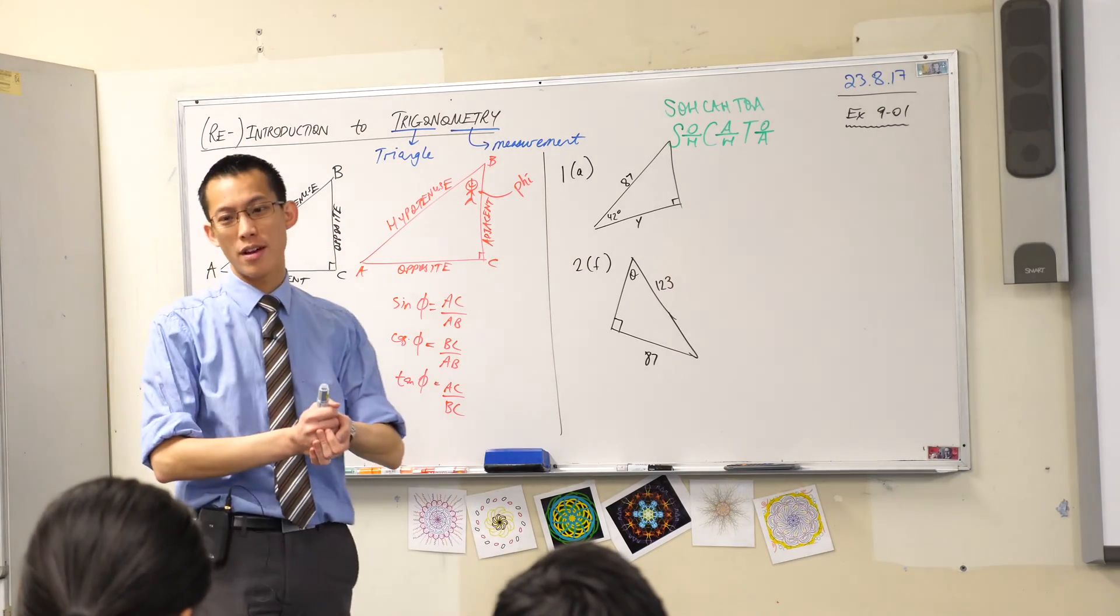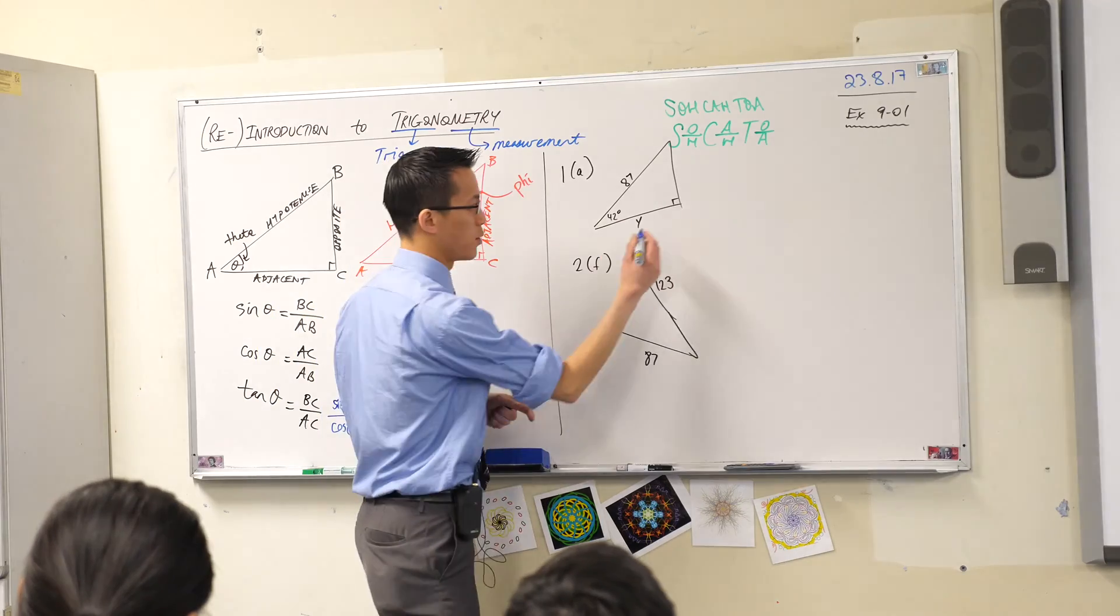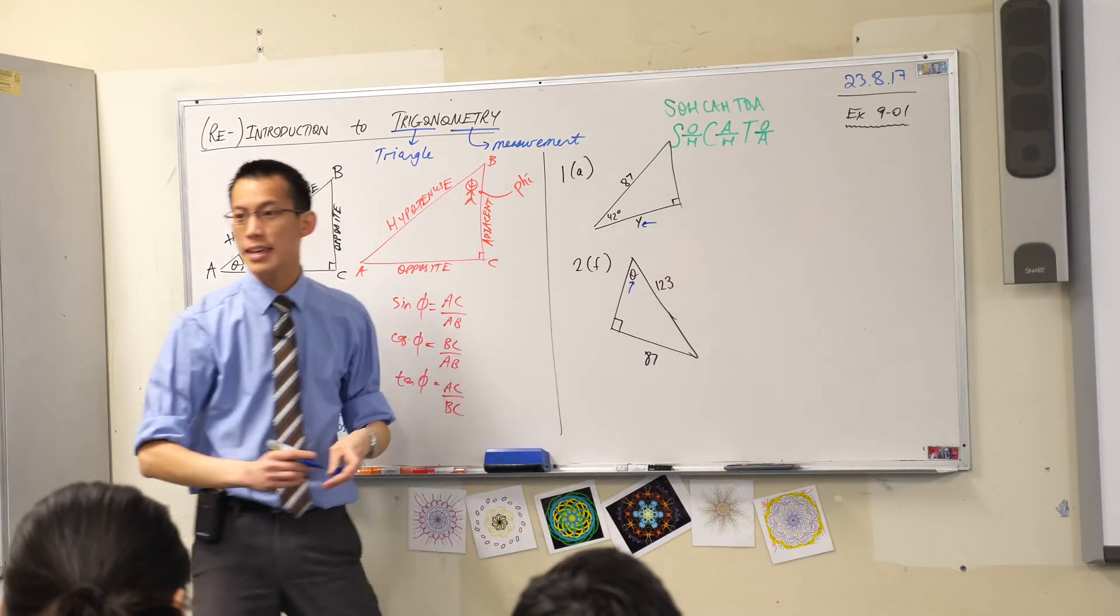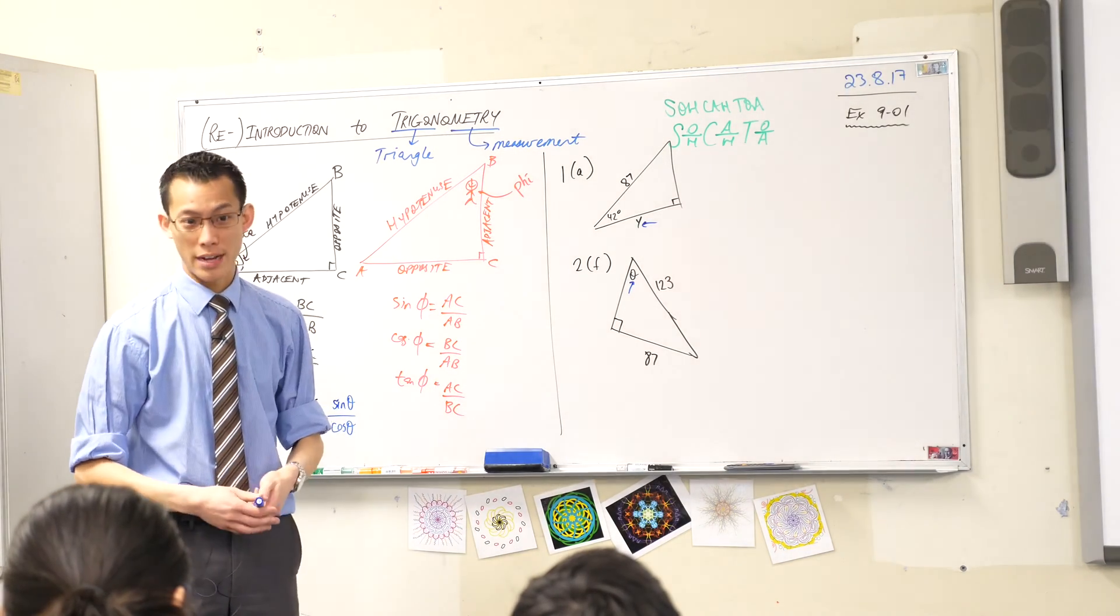In each of these cases, what I'm trying to find out is a pronumeral. You can see here's the pronumeral down here, y, and here's the pronumeral up here, theta. So in the first case I'm after a side, in the second case I'm after an angle.